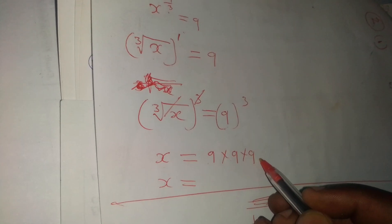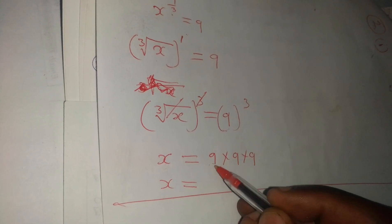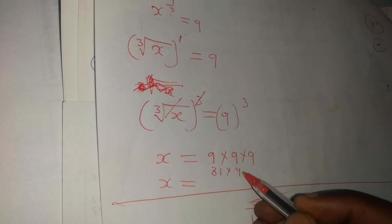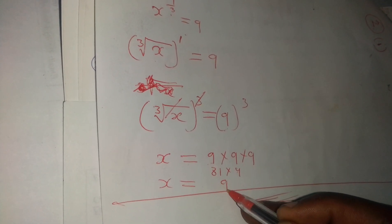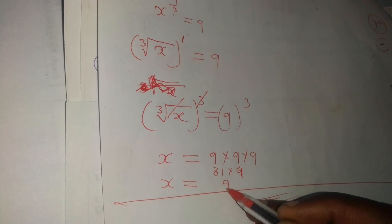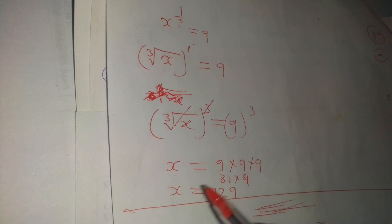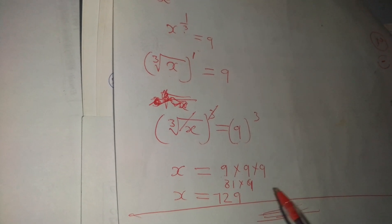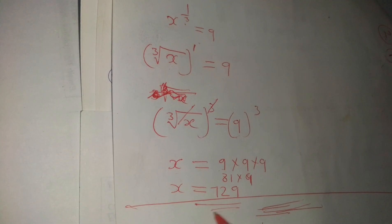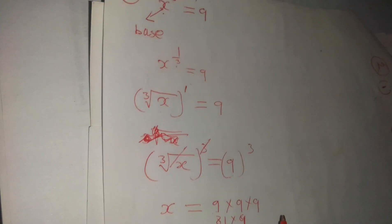We can do it in stages. We say 9 times 9 is 81. Then 81 times 9: 9 times 1 is 9, and 9 times 8 is 72. So our x equals 729. So this is the value of x: x equals 729.